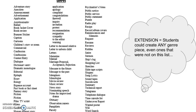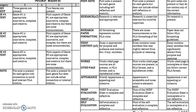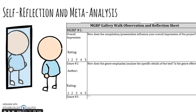Students were assessed on the completion of their individual genre pieces as well as their collaborative research paper using a rubric that was provided to them at the beginning of the unit. Students also completed an evaluation sheet during our culminating gallery walk as they constructively critiqued their peers' work, as well as a self-evaluation sheet as one form of meta-analysis during the unit.